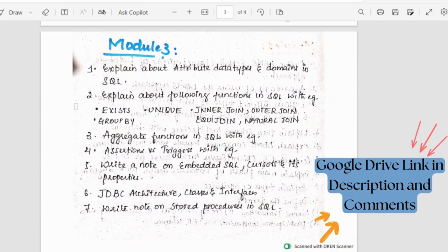Coming to third module, here we have different types of attributes and data types like integer, character, float, bit, string, and then timestamp, boolean value, date, time and all.